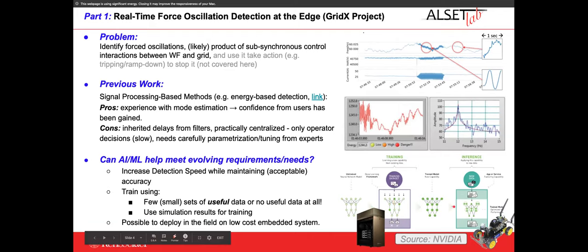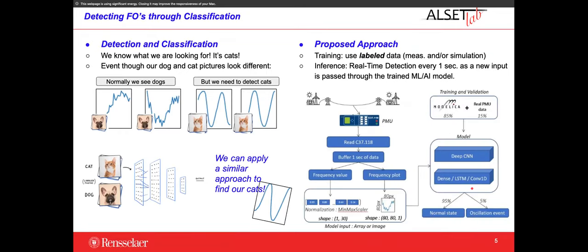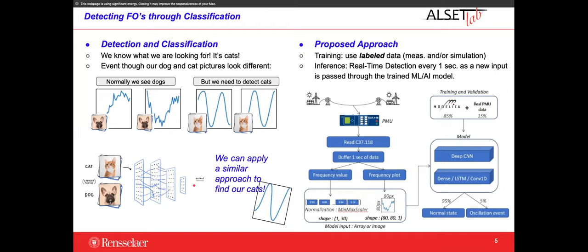Once you've done that training, you can deploy it at the edge. This little embedded board is doing the detection — it's been trained to recognize cats: the car drives, it looks at a cat, and it identifies it. That's the approach we're doing here. We're looking for oscillations — those are our cats. Normally we see patterns like this during normal operation — those are dogs. What you can do with machine learning is take a bunch of pictures of cats and dogs, train the neural network, pass a new image through it, and the output says: yes, it is a cat.